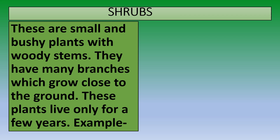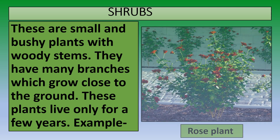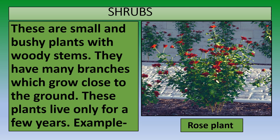These plants live only for a few years. For example, the rose plant. If you look at this picture carefully, you will notice that the rose plant is small and bushy with woody stems, and has many branches which are growing close to the ground.